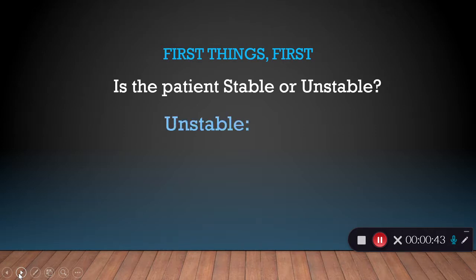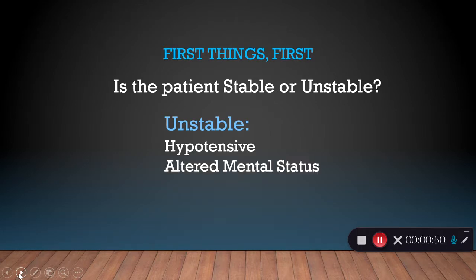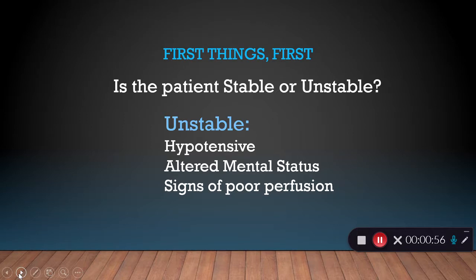An unstable patient is going to be one that has hypotension, an altered mental status, or any other signs of poor perfusion — such as cyanosis or mottled skin. If they're showing you poor perfusion, then we need to jump on this.